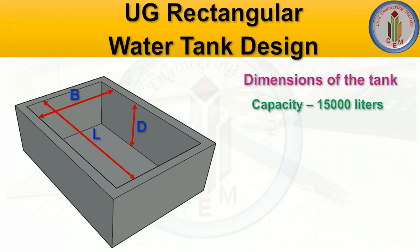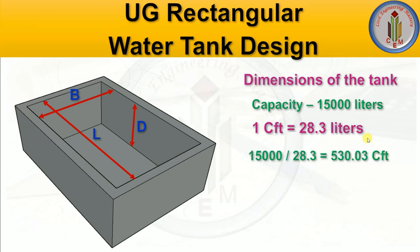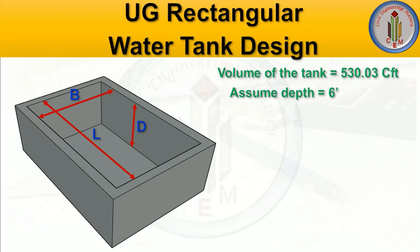Let's start finding out the dimensions of the water tank. The capacity is 15,000 liters. To find the volume in cubic feet: 1 cft equals 28.3 liters, so 15,000 divided by 28.3 gives 530 cft. This is the volume of the tank. Let's assume the depth of the water tank as 6 feet.